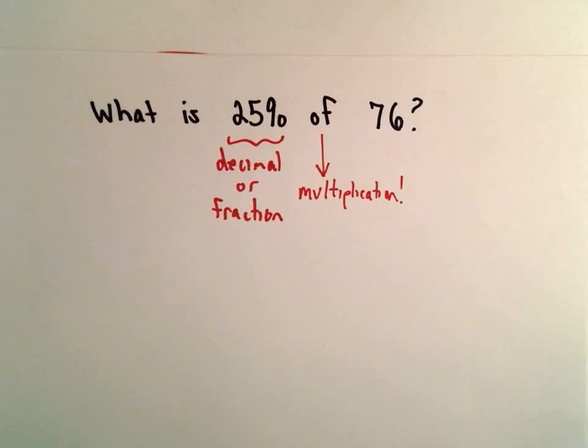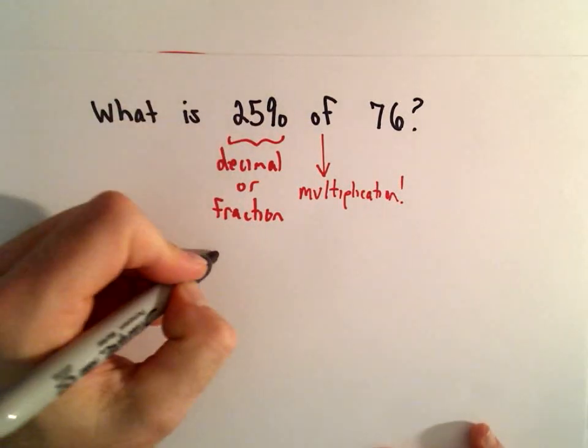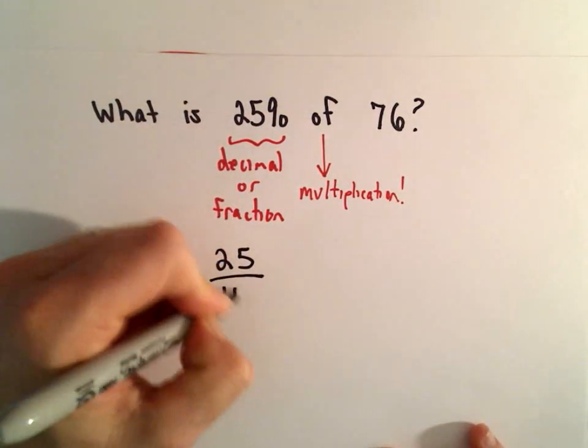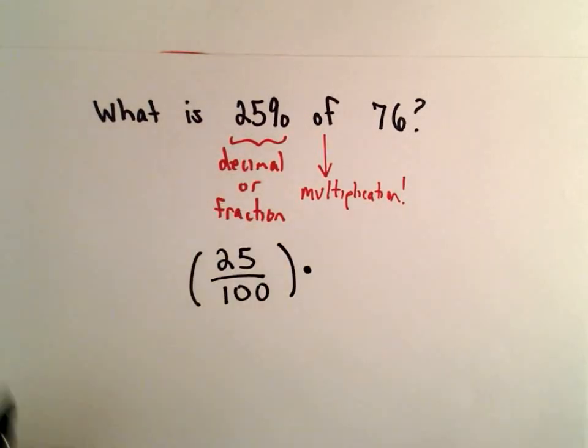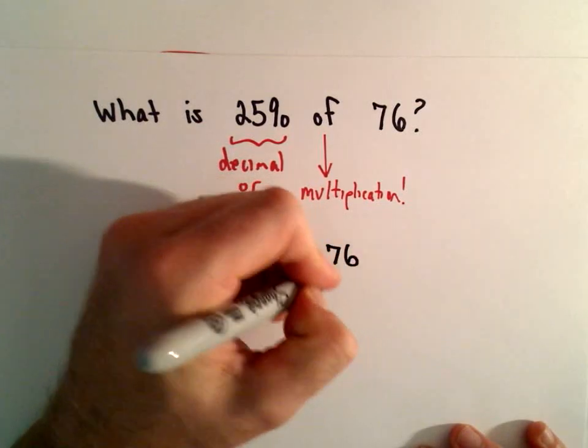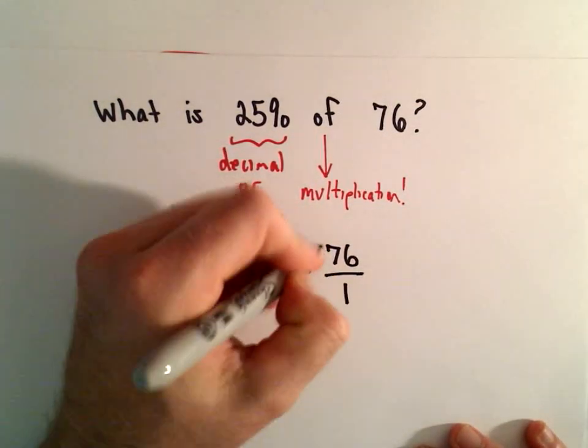So that's what I'm going to do. Well, 25%, we can write that as 25 over 100. Of is going to be our multiplication of 76. I'm even going to write that as 76 over 1.